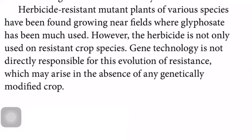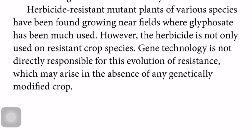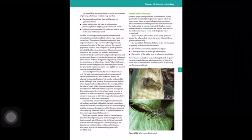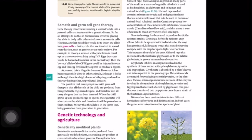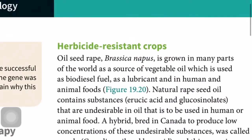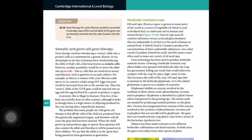Herbicide-resistant mutant plants of various species have been found growing near fields where glyphosate has been heavily used. However, the herbicide is not only used on resistant crop species, so gene technology is not directly responsible for this evolution of resistance, which may arise in the absence of any genetically modified crop. The main lesson is that genetic engineering can be used on plants to produce what we need in the quantity and quality we want, though there are also disadvantages.